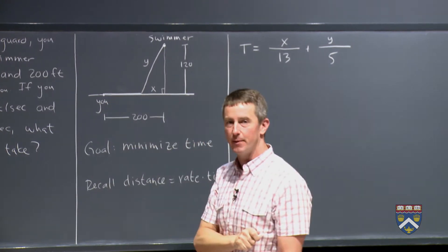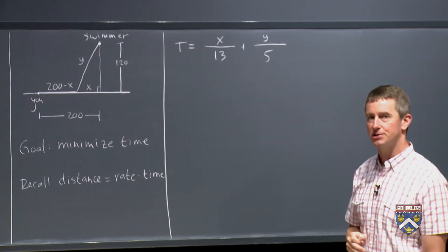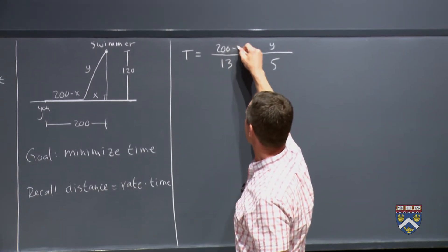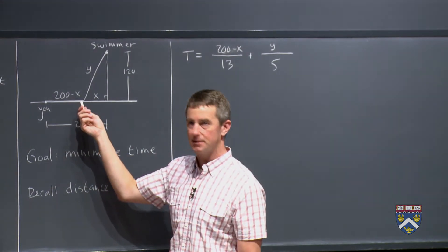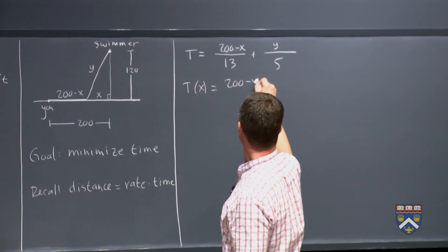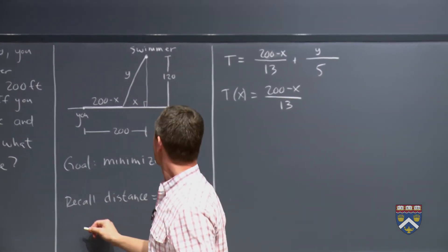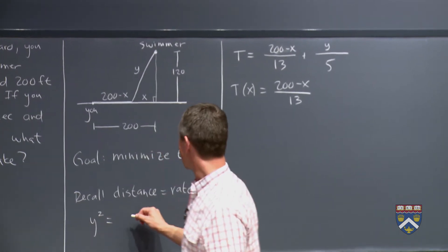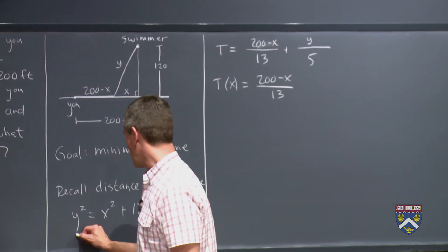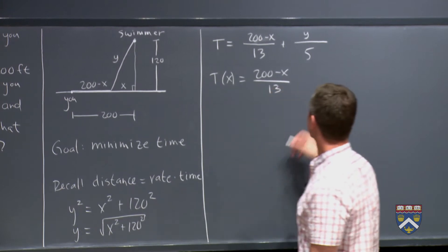And then what would this distance have been? 200 minus x. So that's how we're going to do this. Meaning now I need to change this x. And I want to call that 200 minus x. We're going to run 200 minus x feet, and then dive in and start swimming. So we can rewrite this entirely in terms of x by using the Pythagorean theorem. The Pythagorean theorem says that y squared equals x squared plus 120 squared. So we can solve for y and we get the square root of x squared plus 120 squared. So that's what we can put in here for y.